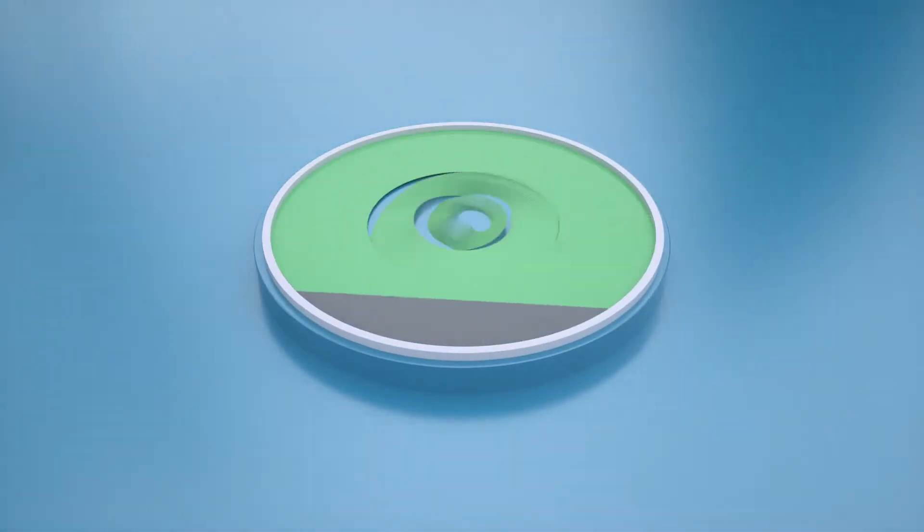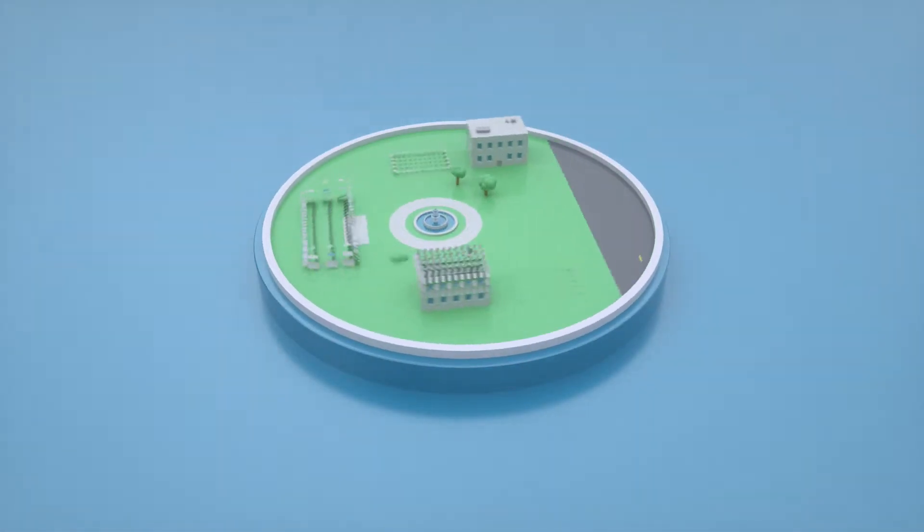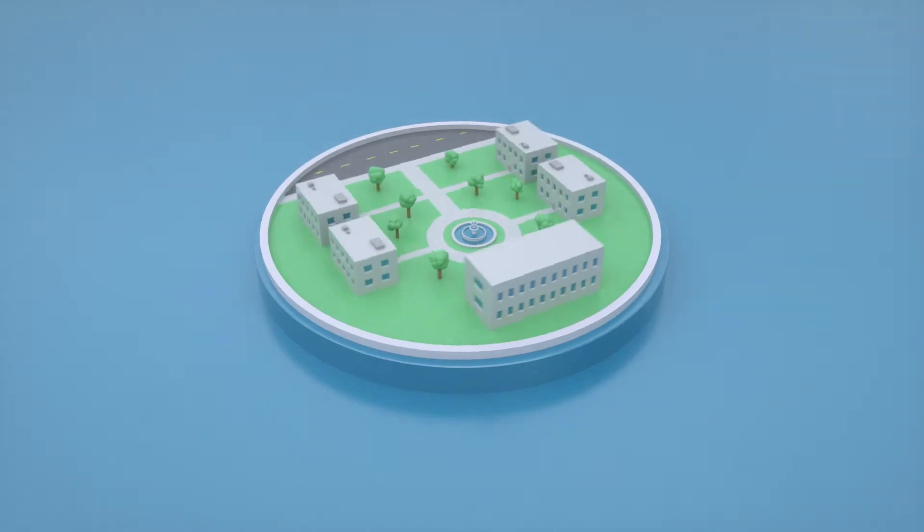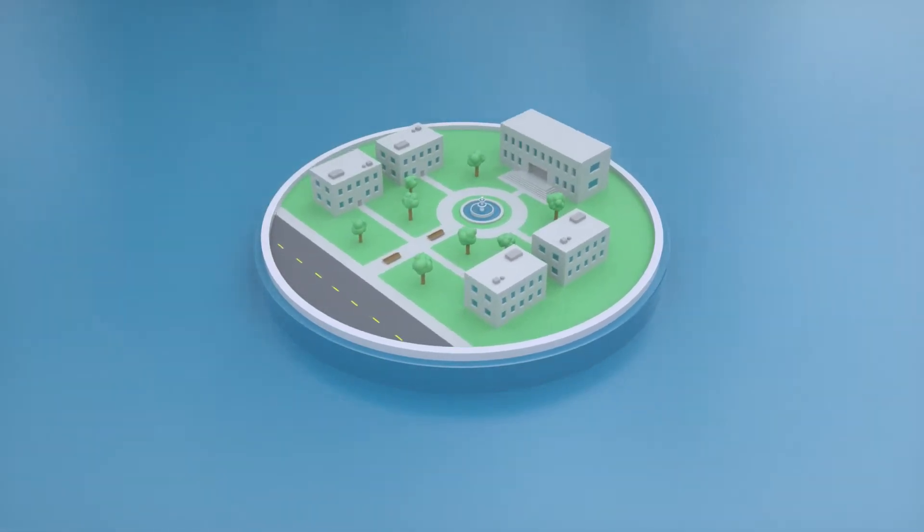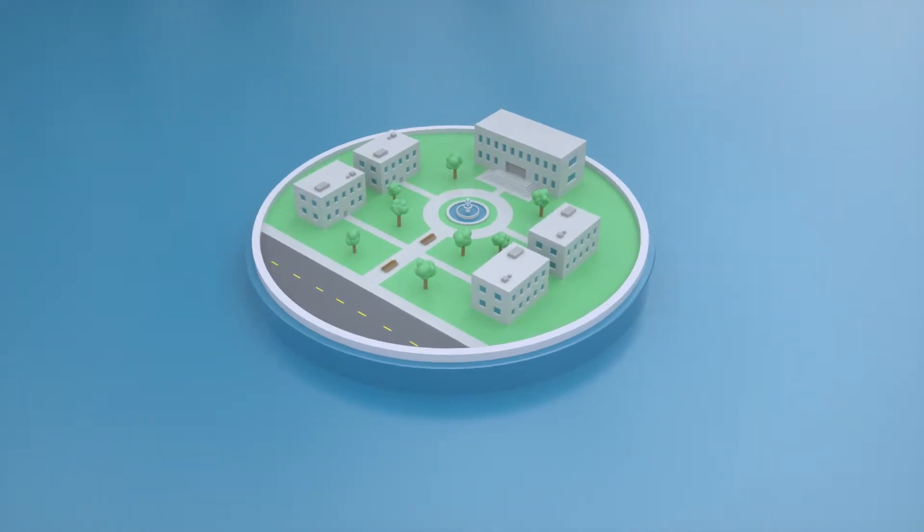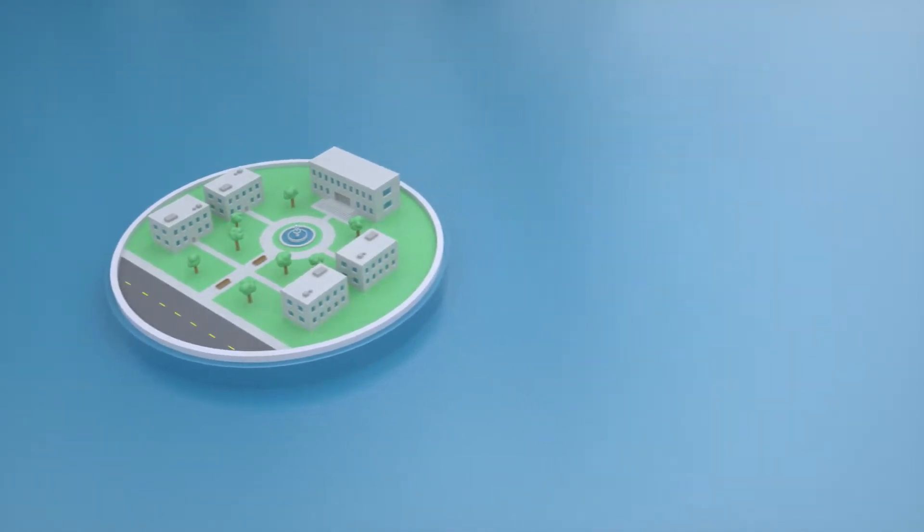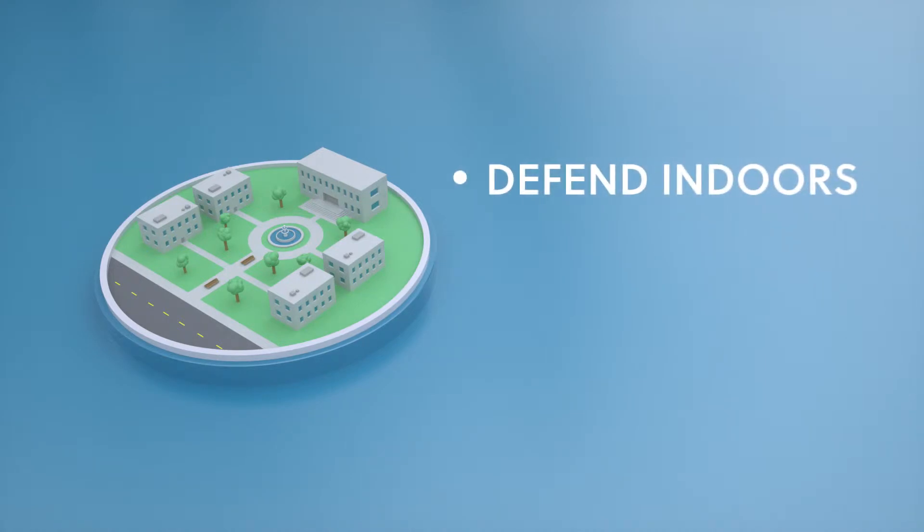Prior to install, we scan the client's facility to build a digital model. It's then stored on the drone's memory, so as it flies through the space, it can compare structures or topography to the digital model. By using this method of localization over GPS, it allows us to defend indoor spaces.